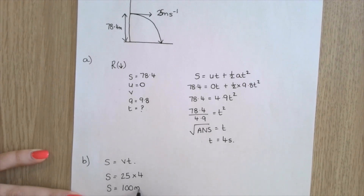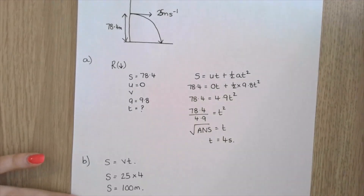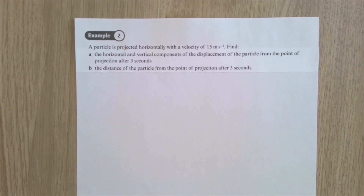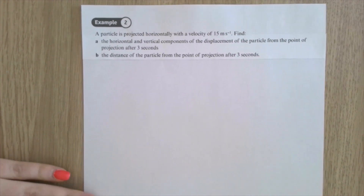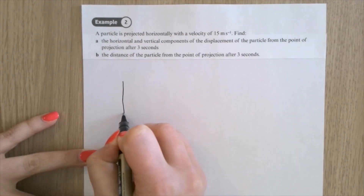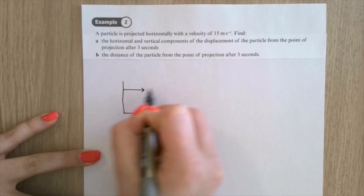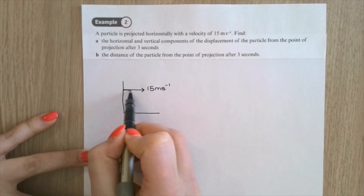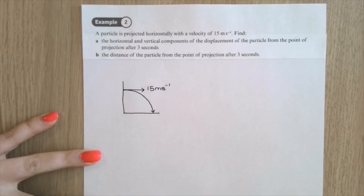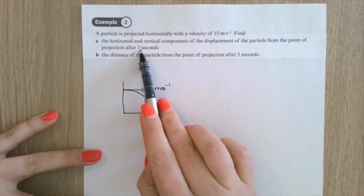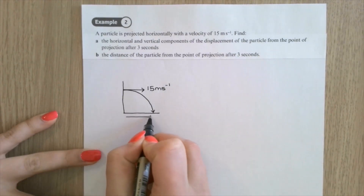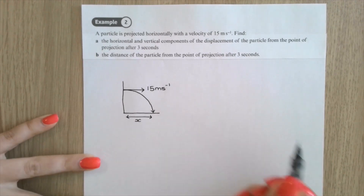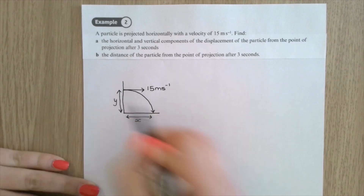Example 2: a particle is projected horizontally at 15 metres per second. The trajectory curves downward. Find the horizontal and vertical components of the displacement of the particle after 3 seconds - that's my x and y values.